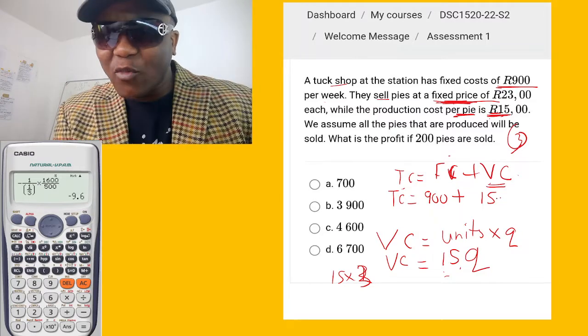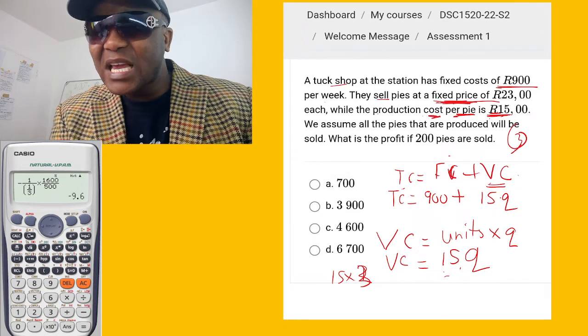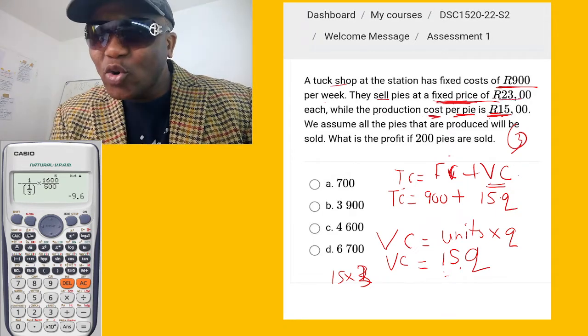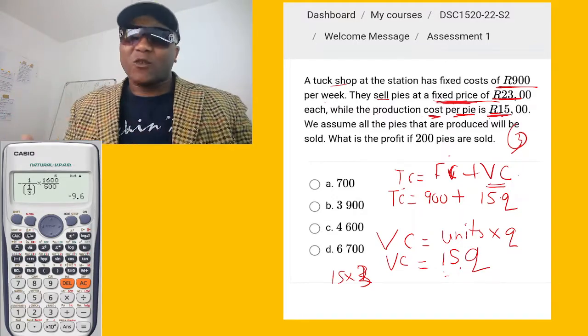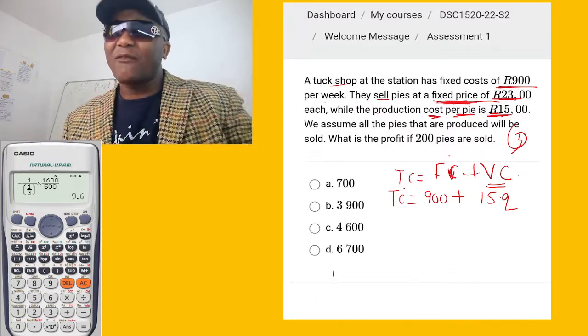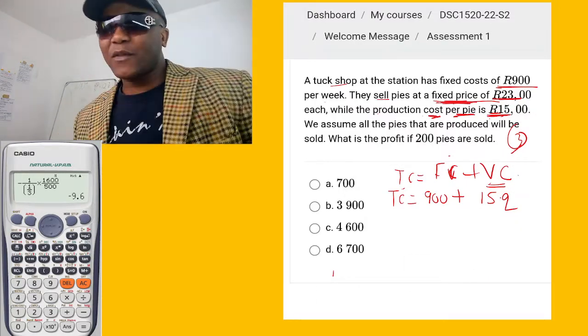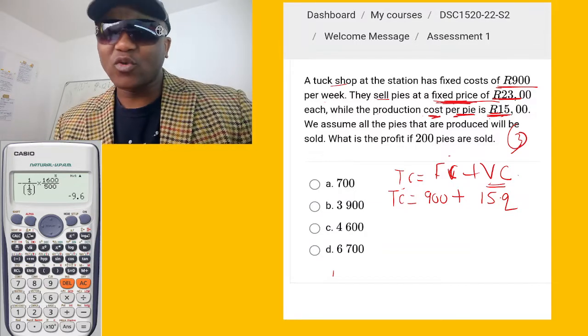So this is how we get the variable cost. For now the variable cost is going to be 15 times Q, because they say here the production cost is 15Q. Why did I not include 23? Because 23 is not cost, it's the price. So we leave that for now, we're gonna come back to that. We got variable cost equals 15Q.